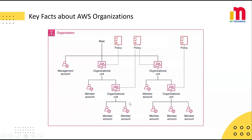Service control policies are designed to restrict permissions, not grant them. You still need IAM policies for granting access. SCPs can be attached at multiple levels such as root, individual OUs, or specific member accounts, and are inherited by all child accounts. For example, if you attach an SCP to the root, it applies to all the OUs and member accounts under it. You can also create nested OUs up to five levels deep, meaning you can place an OU inside another OU. Only the management account has the authority to remove accounts from the organization.